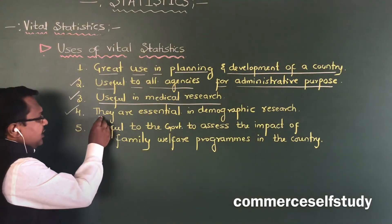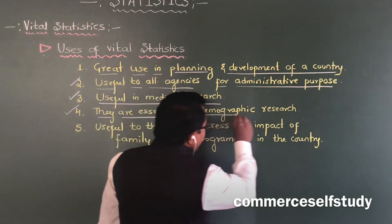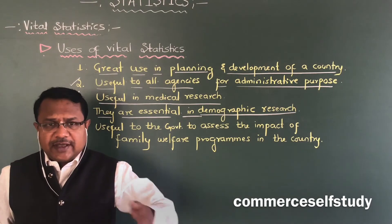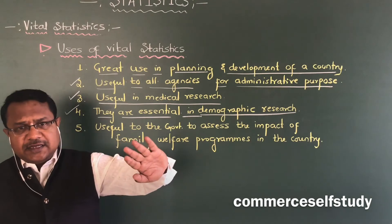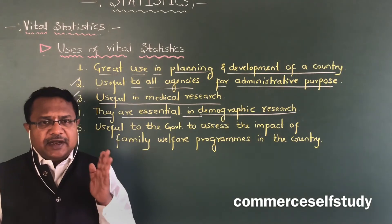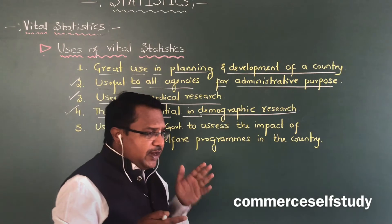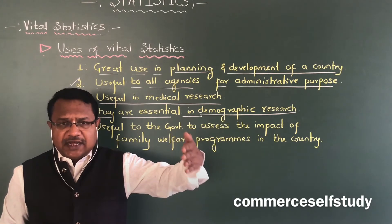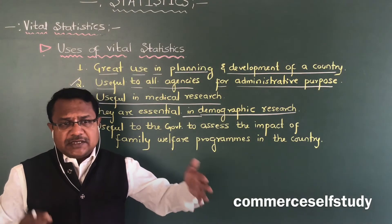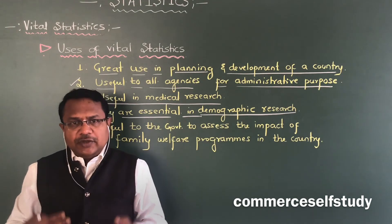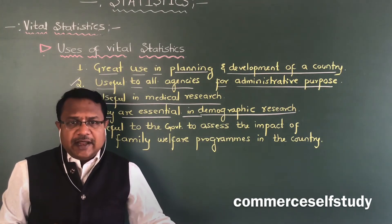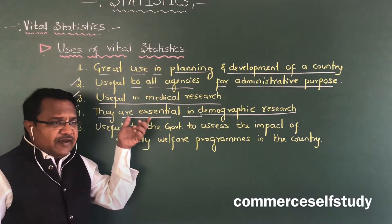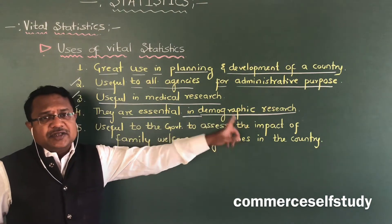The fourth point is: vital statistics is essential in demographic research. Area-wise, zone-wise, and state-wise comparisons can be made — for example, North Indian culture and health versus South Indian culture and health. Vital statistics is very much helpful for studying demographic research. Based on living style, food habits, and regional differences, we can study the average life expectancy across South India, North India, and coastal areas.